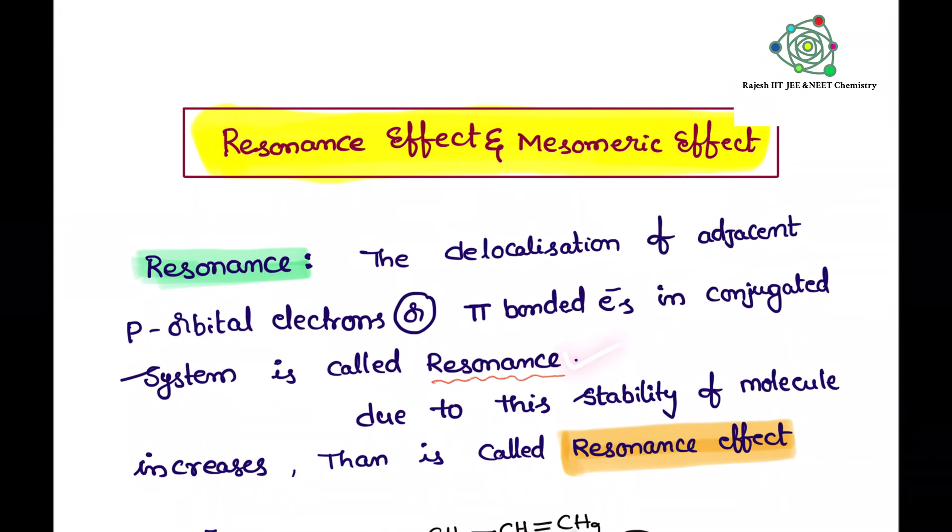What is conjugated system? I will tell you with an example now. Due to this delocalization of pi bonded electrons or p-orbital electrons, the stability of the molecule is increasing, then that we can call it as resonance effect.